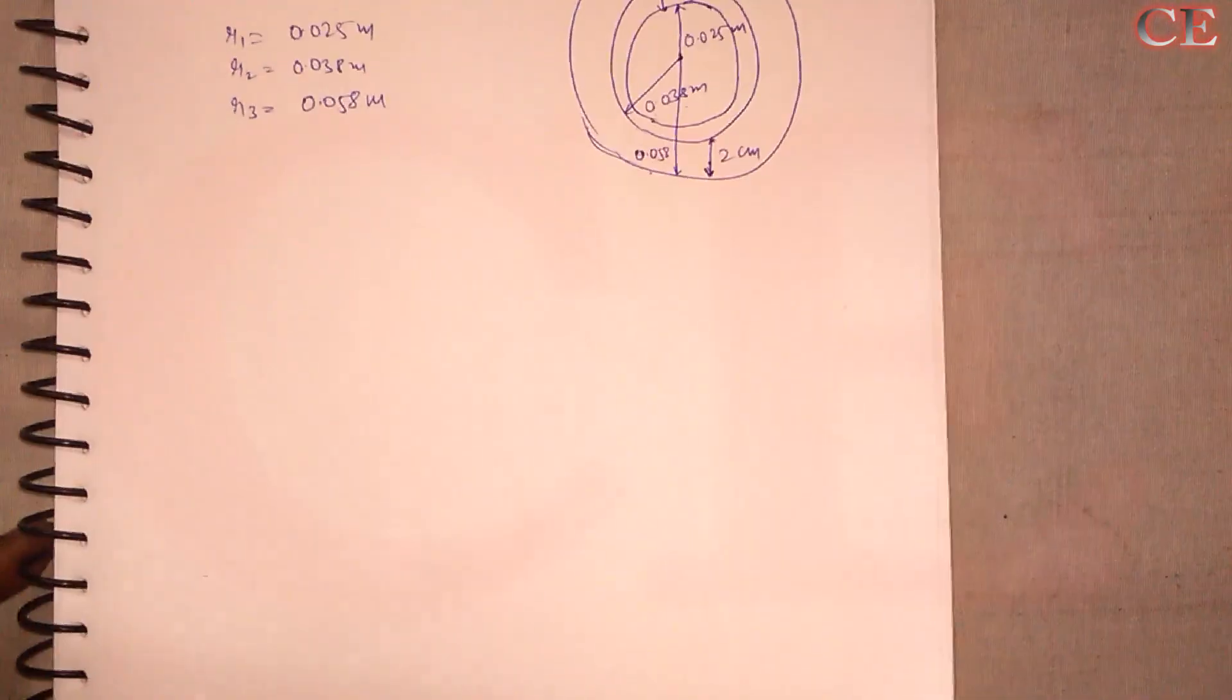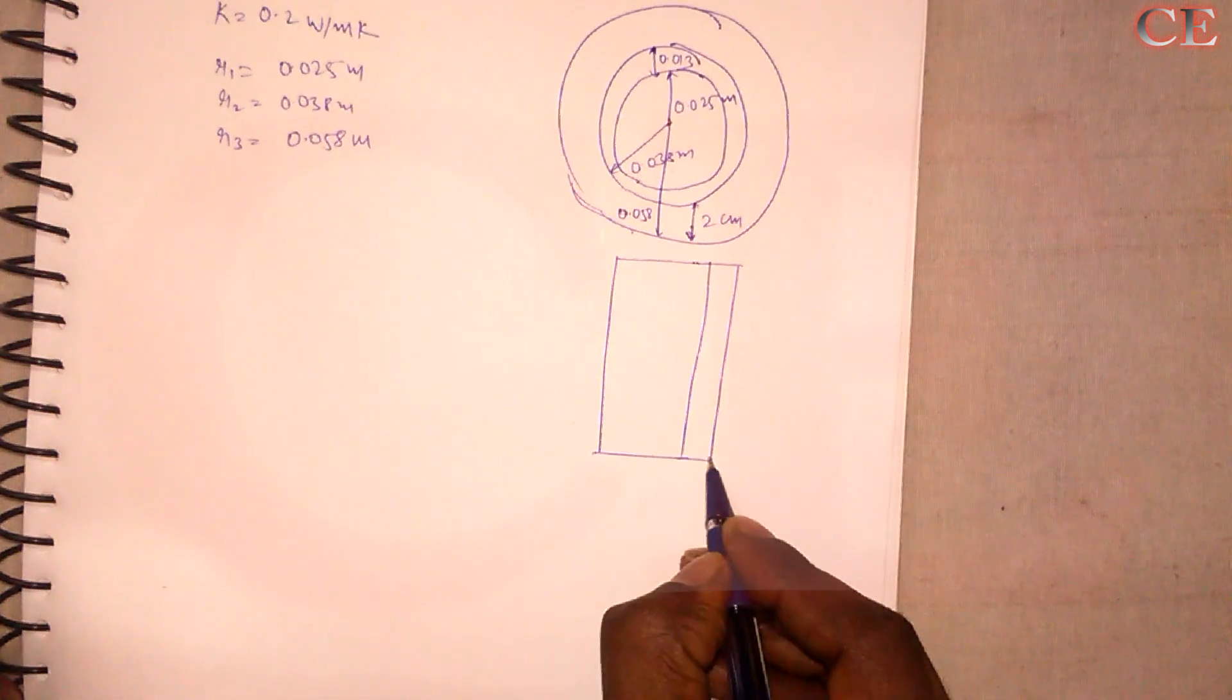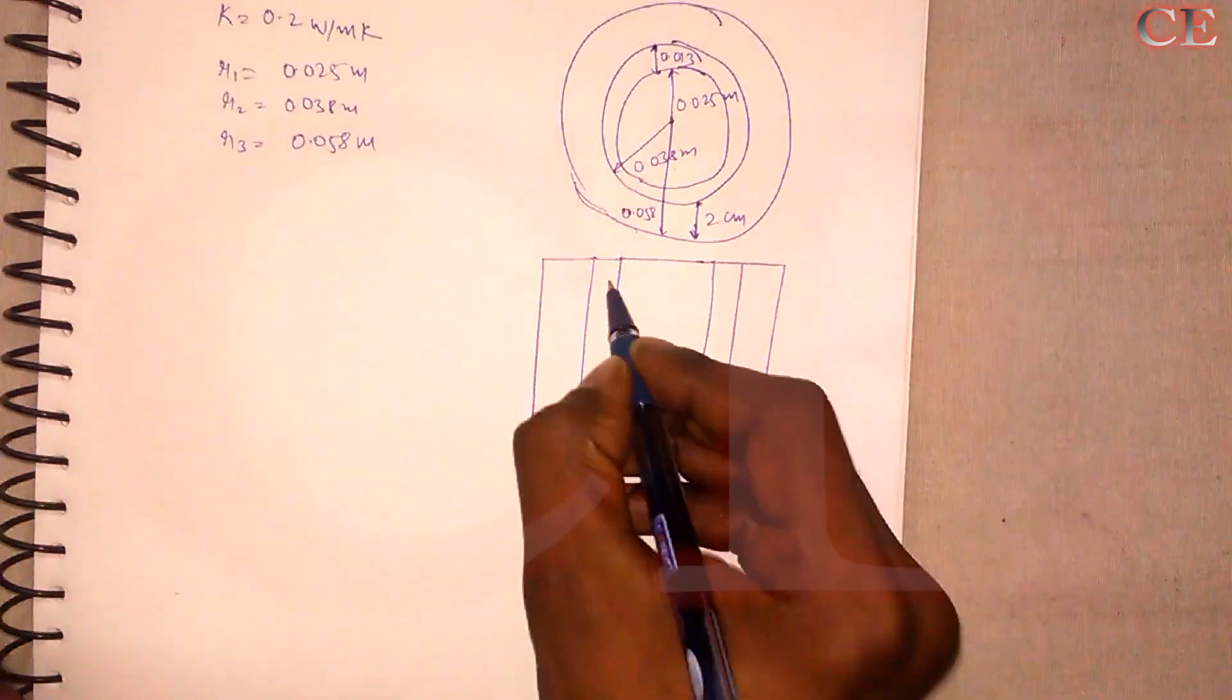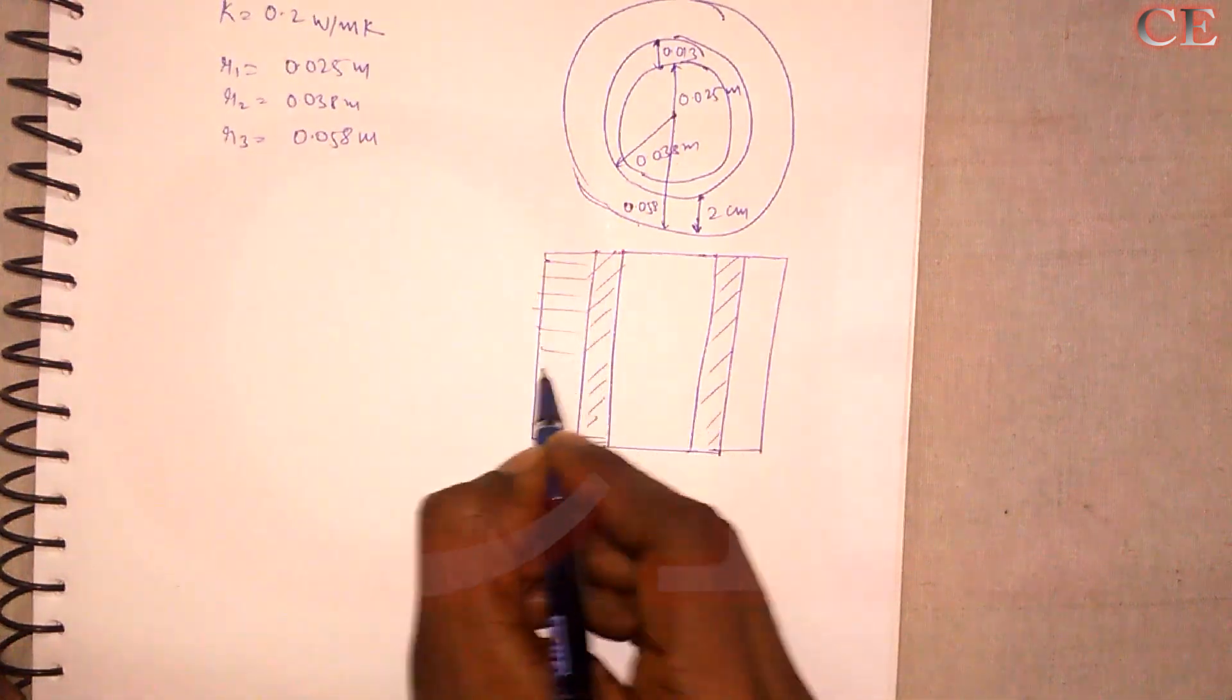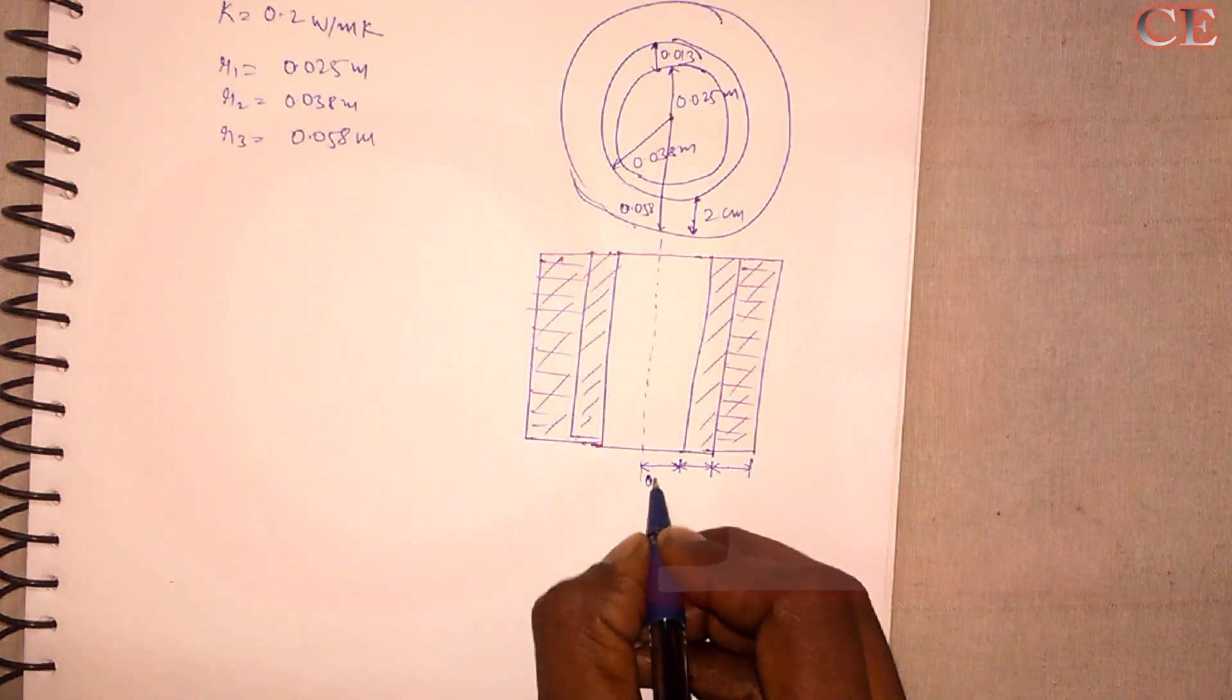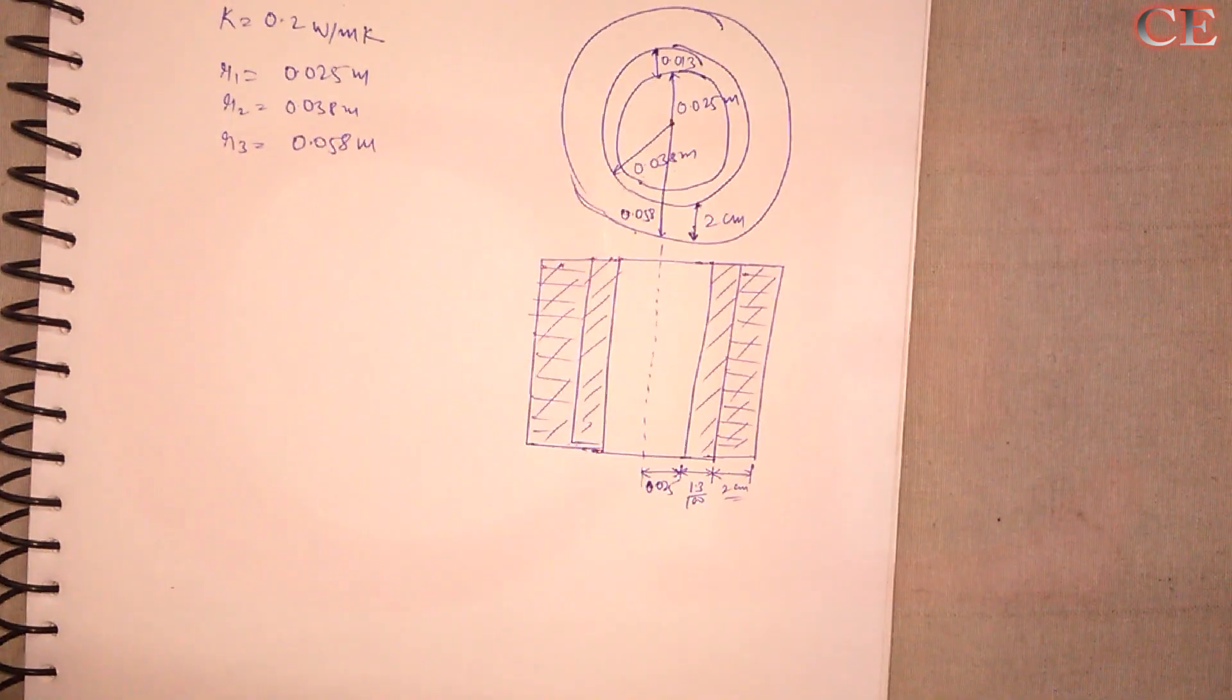So the inner radius that would be, say as R1, that would be equal to R1 would be equal to 0.025 meters. R2 would be equal to 0.038 meters. And R3 would be equal to 0.058 meters. Let us see it is in 3D that how it will be seen in 3D. So this is a cylinder. And again, it is insulated by, sorry, it has a thickness of 1.3 centimeter. And again, it is insulated by 2 centimeter insulating material. So here again, the same in this direction as well. So this is the thickness of the material, of the tube. And this is the insulating material.